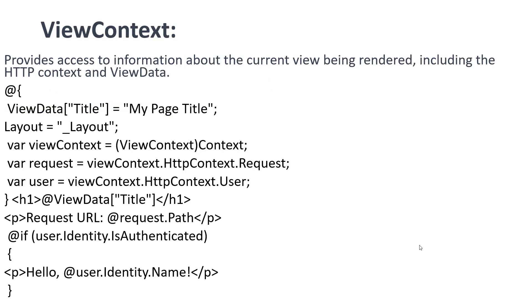The next one is ViewContext. ViewContext provides access to information about the current view being rendered, including the HTTP context and the view data. For example, using ViewContext.HttpContext.Request you can get the request path of your URL. You can also get the user that is currently logged into the system.